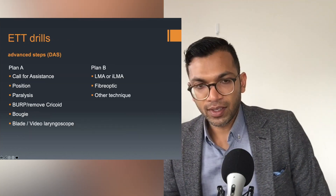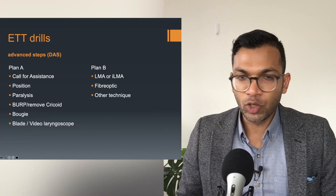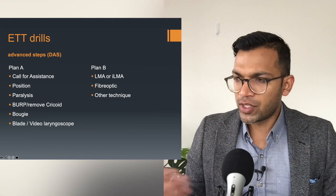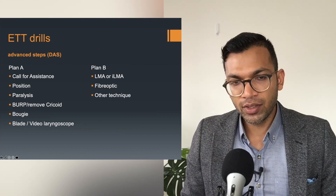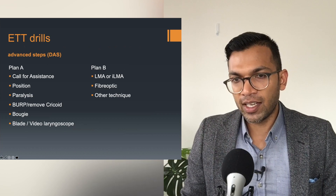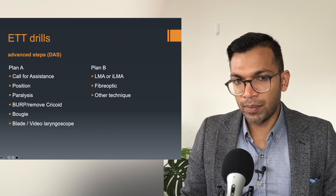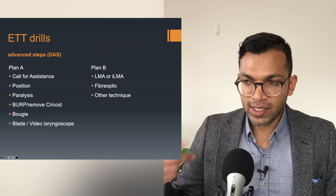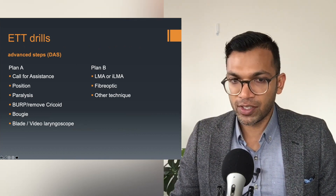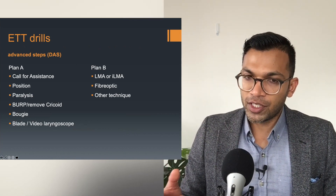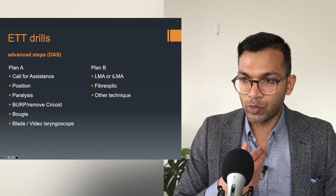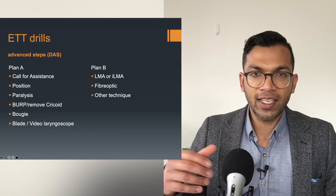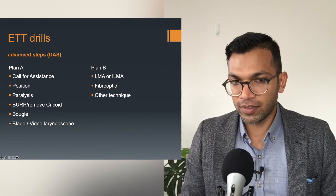For endotracheal intubation I always think of APB: call for assistance early, because when you start out you won't be doing this alone; get a good position of the patient; and ensure paralysis. Then I do BURP, bougie, and blade. I rehearse this time and time again and make sure my nurses know it too. BURP - backwards, upwards, right-side pressure - only requires your hands, so no extra equipment needed, and it's extremely effective.